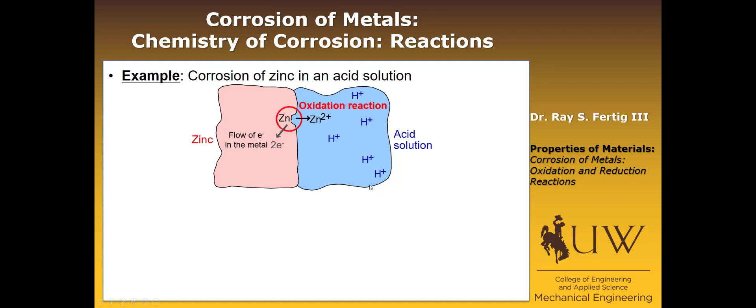We call this kind of reaction an oxidation reaction. So that's one of the two reactions that are required. The second reaction is where the two electrons that the zinc gave recombine with two hydrogen ions from the acid solution and form hydrogen gas. This reaction, where the material accepts the electrons that have been given up by the metal, is called a reduction reaction. So there's these two reactions that are required.